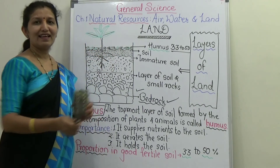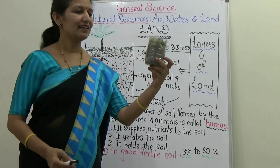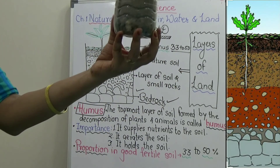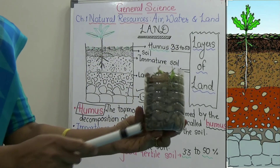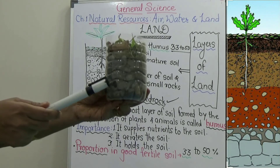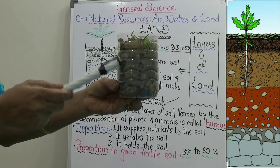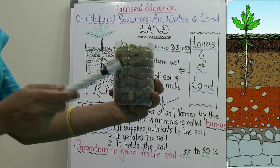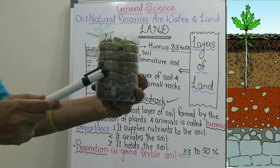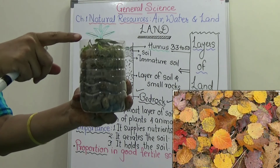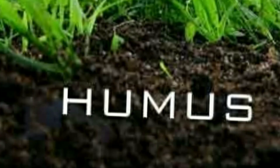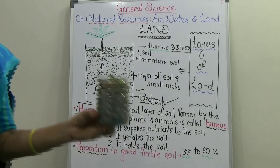Dear students, I have also brought a small miniature model of these layers of land. In this transparent bottle, you can see the different layers clearly. At the bottom is the layer of bedrock with big rocks. Next to that are small rocks and soil. Above that is the immature soil layer, which contains rocks, stones, soil, sand, microbes, and insects. And the topmost layer is formed by the remains of plants and animals — that layer is called humus. In this way, I have tried to explain the different layers of land.